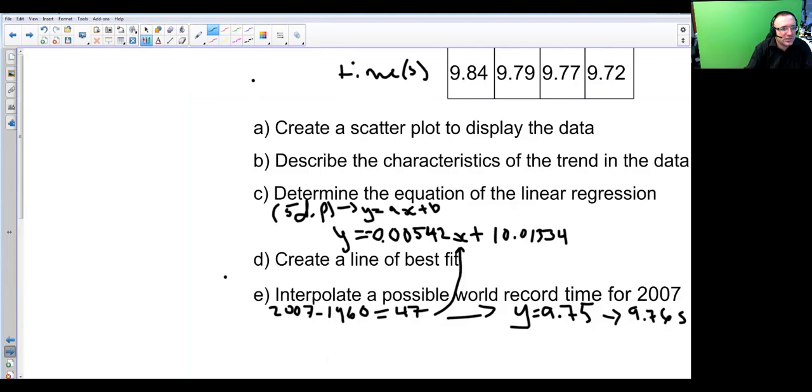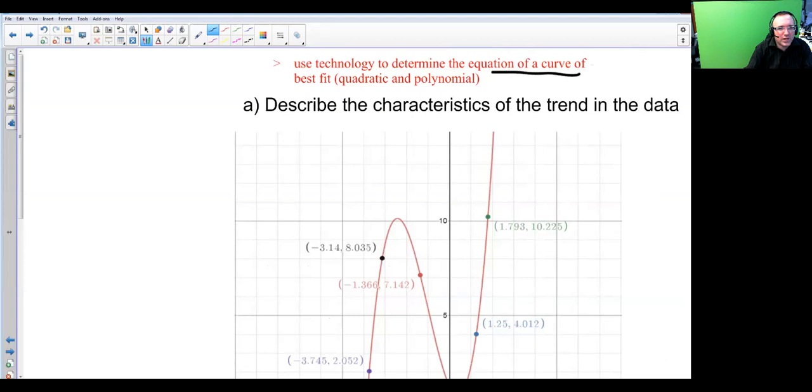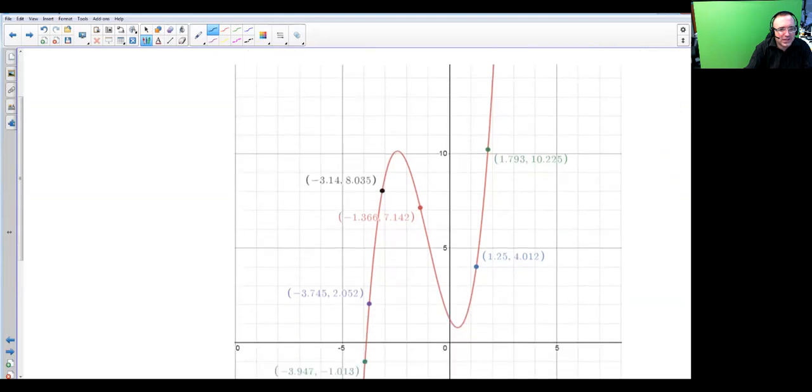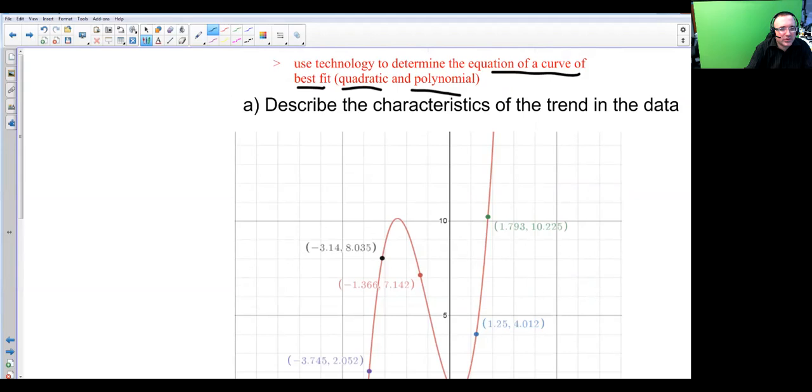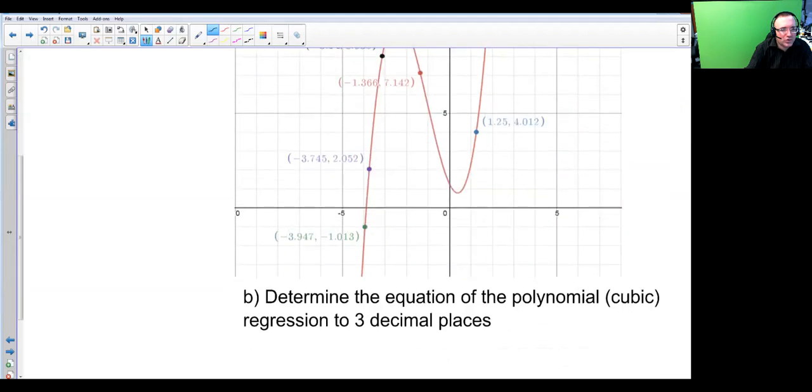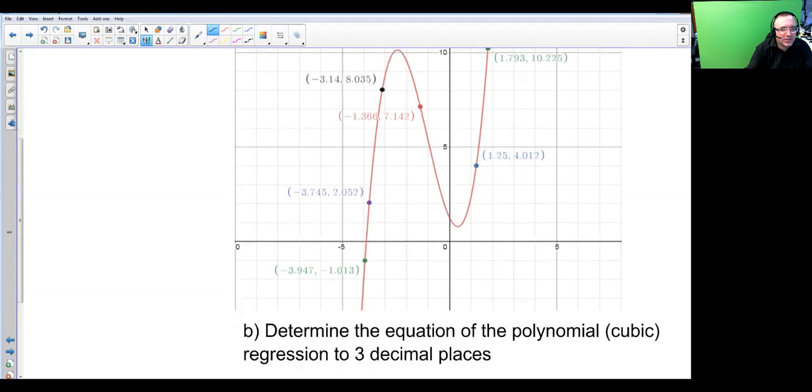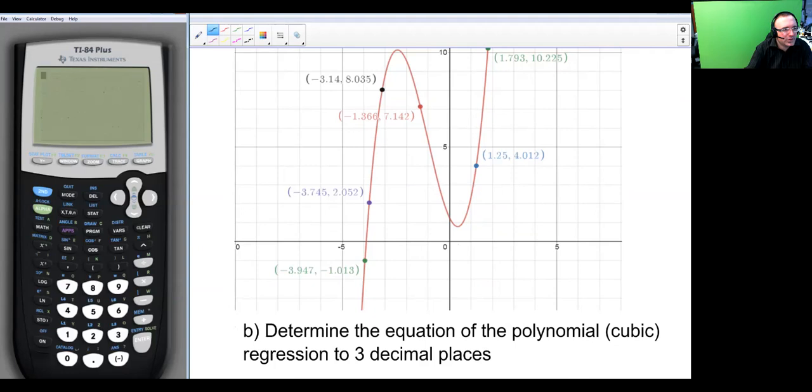Here's another thing that you have to use for this topic: using technology to determine the equation of a curve of best fit, either through a quadratic or polynomial. Let's describe the characteristics of the trends in this data. It looks like it starts in quadrant 3, goes up to quadrant 2, goes back down to quadrant 1, and stays in it. So it makes two end behaviors. Two turning points, and the end behavior is from quadrant 3 to quadrant 1.